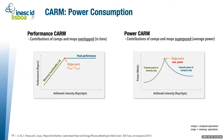The ridge point is the sweet spot of the architecture: the minimum arithmetic intensity to achieve maximum performance. When we think about power consumption — average power — this is probably the worst point, because all units are completely active both in the compute part and in the memory subsystem.